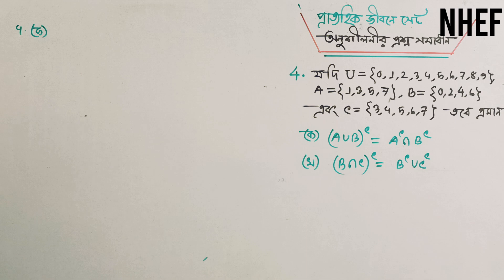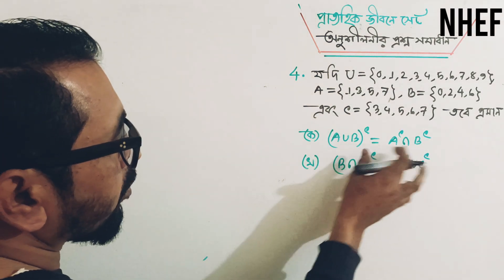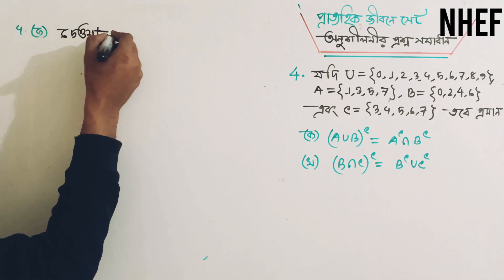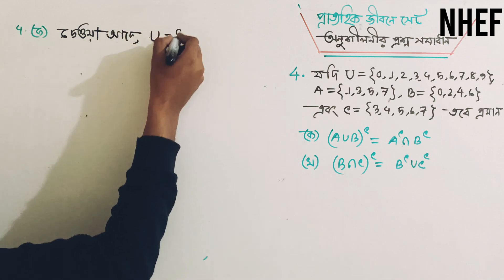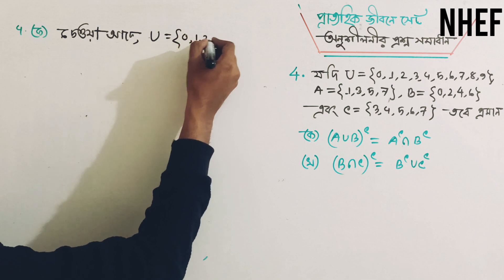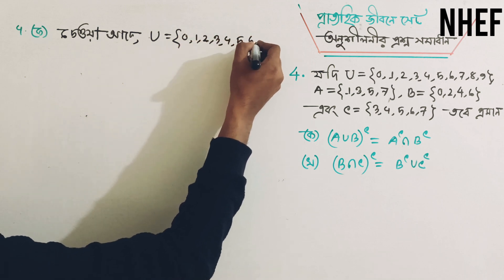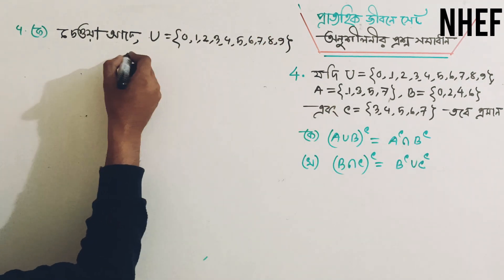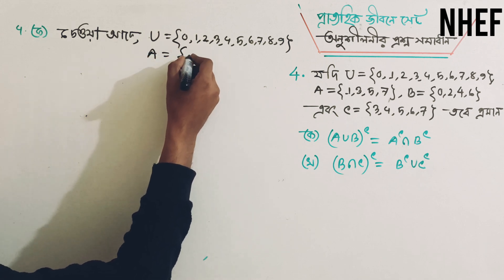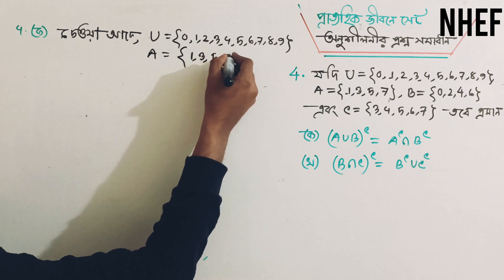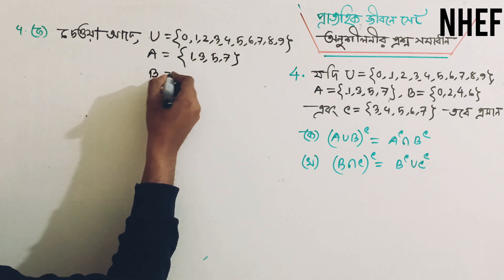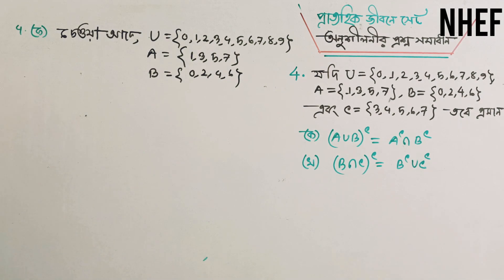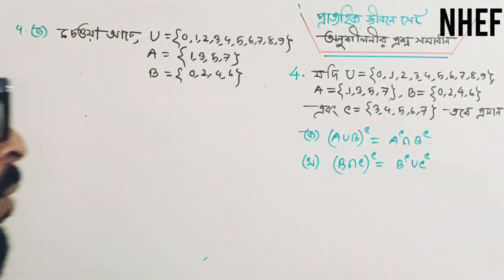Which one — like a single digit — yes, to say that. The universal set is 0, 1, 2, 3, 4, 5, 6, 7, 8, 9. The value of A is 1, 3, 5, 7. The value of B is 0, 2, 4, 6. If this solution is to be found, it will be 0, 3, 6, 7, 8.